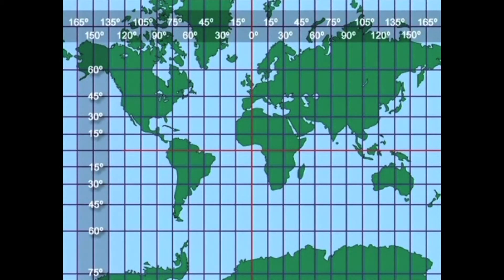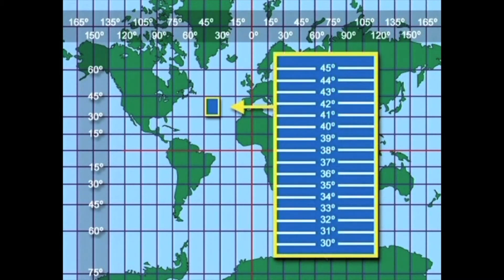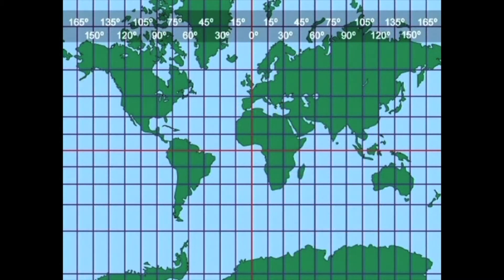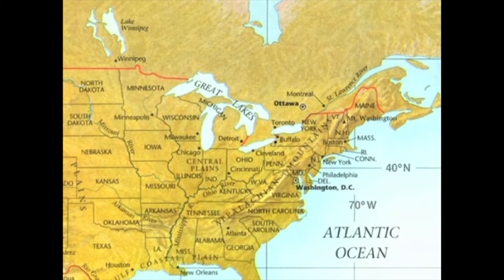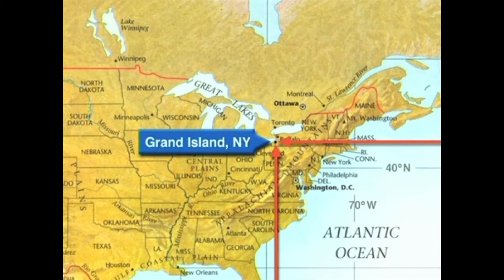There are a few more things to know about latitude and longitude. The lines on our globe and map were marked at every 15 degrees, but there are even more lines between those. For example, between 30 degrees north latitude and 45 degrees north latitude, there is 31, 32, 33, 34, 35, and so on up to 45 degrees. And between 90 degrees west longitude and 105 degrees west longitude, there is 91, 92, 93, 94, and so on until you reach 105 degrees. By knowing the exact degree number you can locate places even more precisely — for example, the starting position for my journey is precisely 43 degrees north latitude and 79 degrees west longitude, otherwise known as Grand Island, New York.